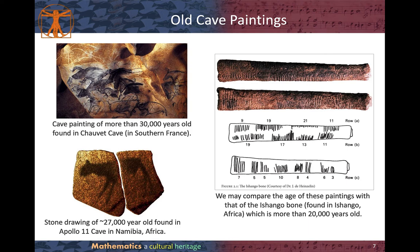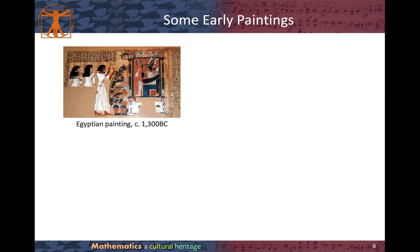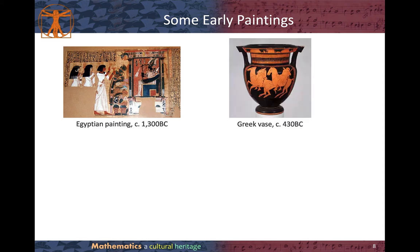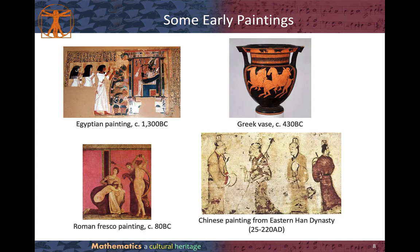After some prehistoric paintings, let's take a look at some early paintings. This is an Egyptian painting roughly from 1300 BCE — very colorful and portraying humans. This one is a Greek vase dated back to 430 BCE. This is a Roman fresco painting roughly from 80 BCE, also portraying a few humans. And this one is a Chinese painting from the Eastern Han Dynasty, which also portrays humans.